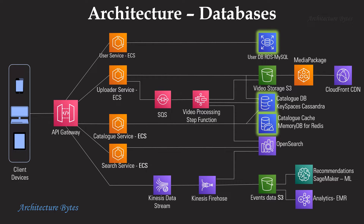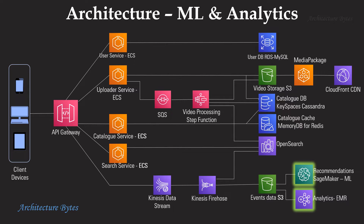Databases are RDS MySQL for storing user-related information, and Amazon Keyspaces for storing the catalog. The catalog contains information about all the videos available in the system. Note that Keyspaces is Amazon-managed Cassandra. Catalog cache is maintained in MemoryDB for Redis. Amazon SageMaker does machine learning and EMR is for analytics.